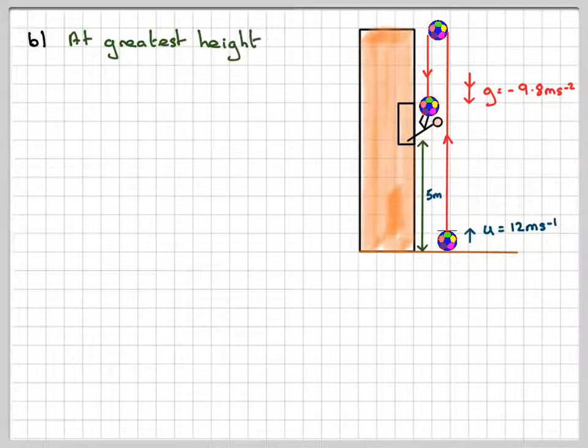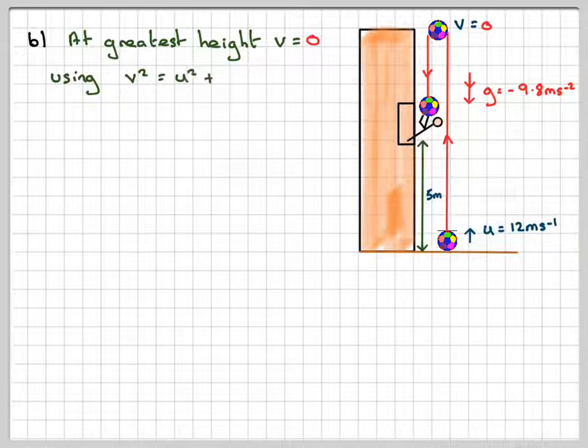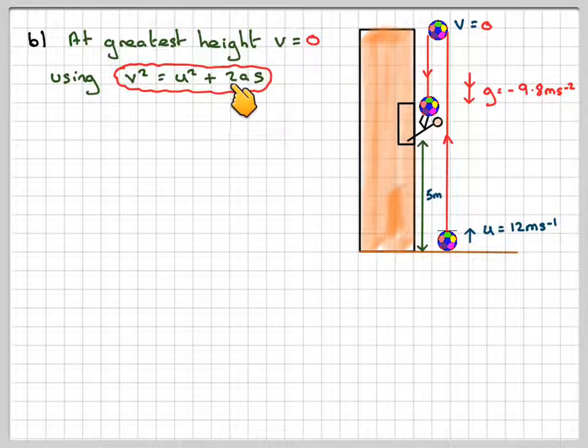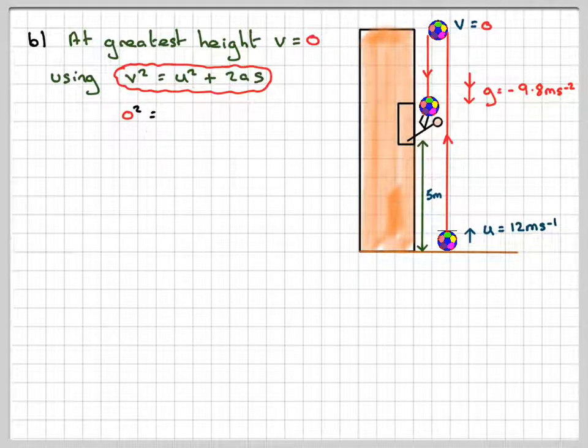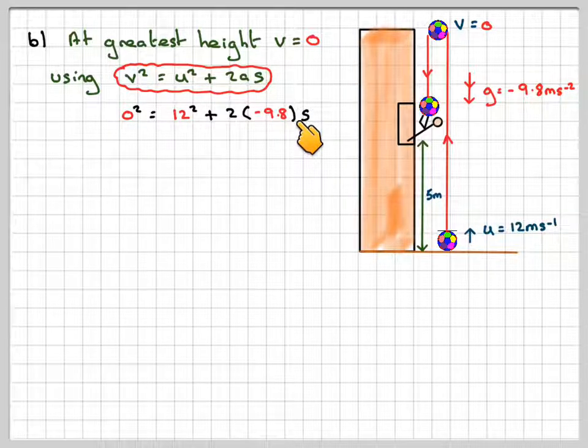So at the greatest height, v will be equal to 0. So using v squared is equal to u squared plus 2as, 0 squared will be equal to the initial velocity 12 squared plus 2 times minus 9.8s.